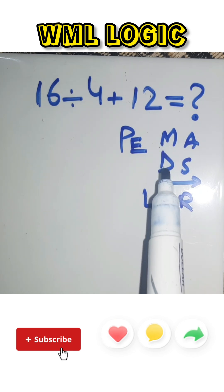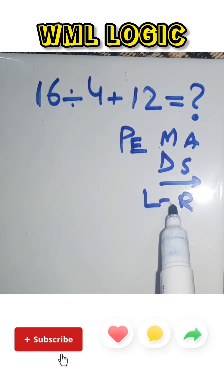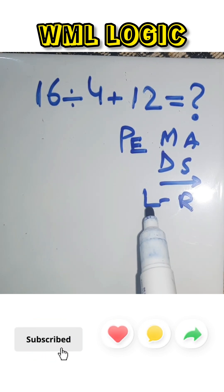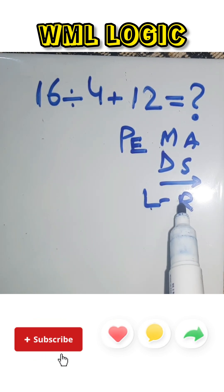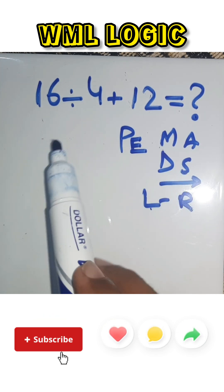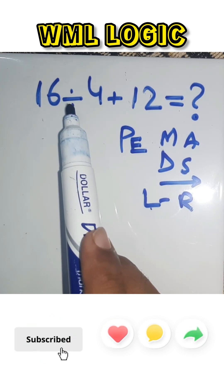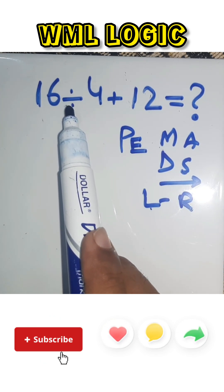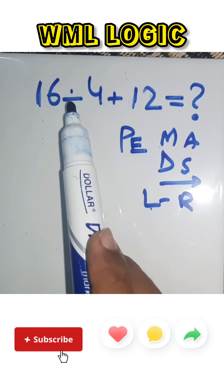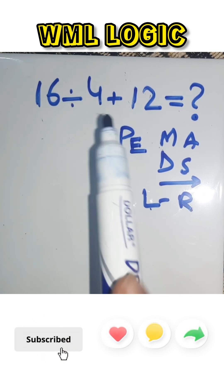Multiplication and division have equal priority, and we go from left to right — the same as addition or subtraction. So in this expression, we have one division and one addition. We solve division first, then addition.